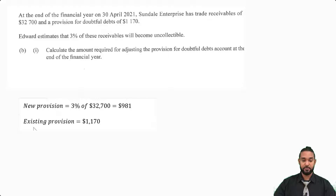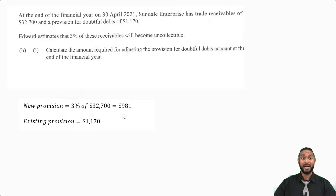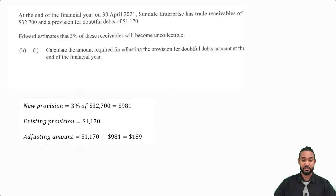The new provision of $981 is less than the existing provision of $1,170, which requires a decrease to carry it from $1,170 to $981. The adjusting amount is $1,170 minus $981, which equals $189. Now let's see where we have to put that in the T-account — this is actually the next part of the question, which asks us to record this answer in the provision for doubtful debts account to show where the adjustment should be recorded.